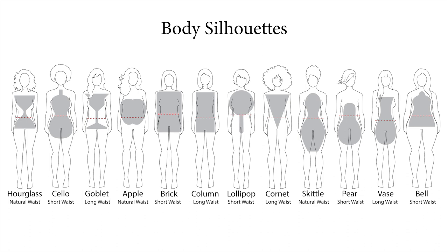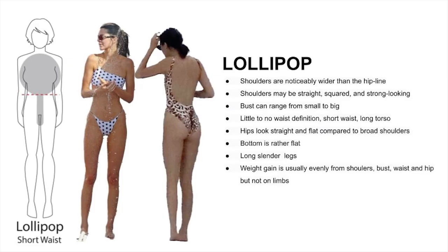Moving on to the top-heavy portion of the shapes — the lollipop. While it's assumed many people desire this silhouette, not many high-end fashion designers use it as a model archetype, as it's considered too top-heavy with very slender legs. Here are the key features: shoulders are notably wider than the hips, shoulders may be straight, square, or very strong-looking. Bust can range from small to big. Little to no waist definition, short-waisted, long torso. Hips look straight compared to the broad shoulders. The bottom is small with long, slender legs.